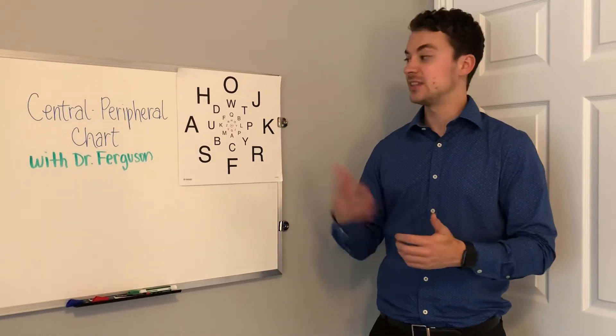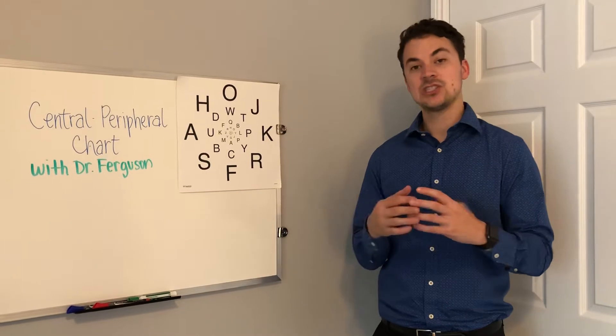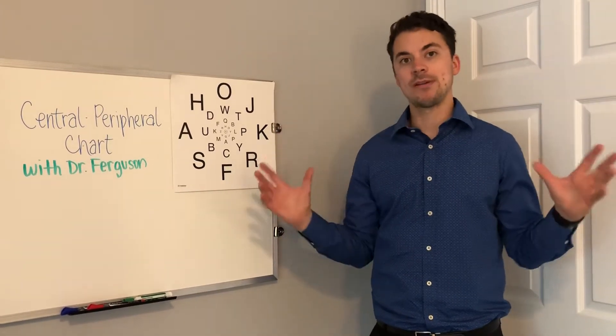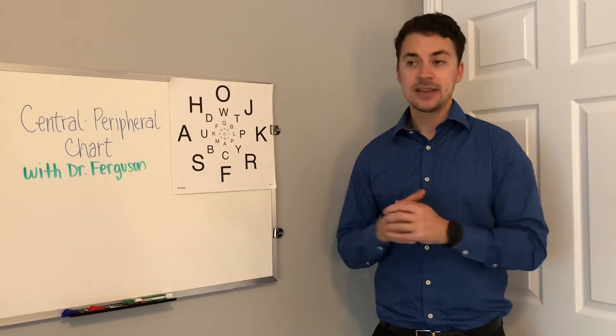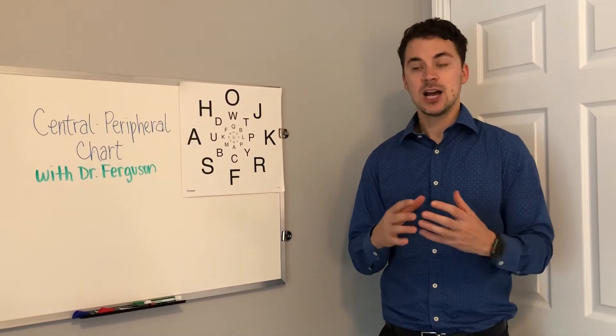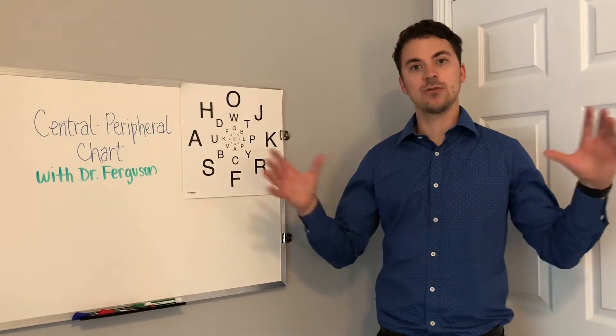This next exercise is with the central peripheral chart. This is a type of eye chart that is used to improve your peripheral awareness because a lot of kids, adults, and post-concussion patients sometimes have a really hard time with peripheral awareness.